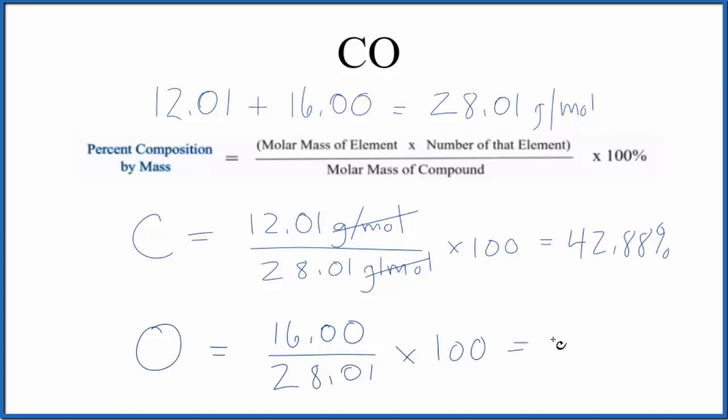and we get 57.12%. So these numbers here should add up to close to a hundred, or exactly a hundred. Here I believe they're exactly a hundred. So that's how you find the percent composition by mass for each element in CO, carbon monoxide.